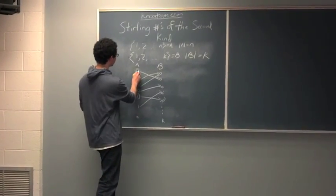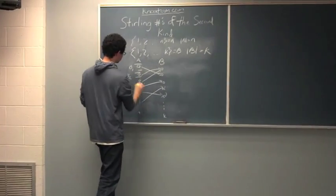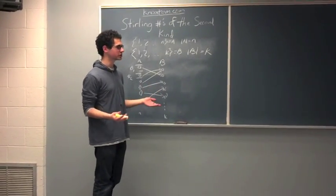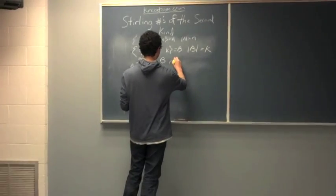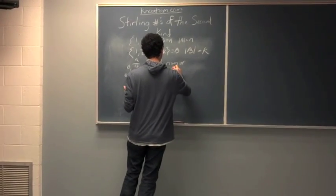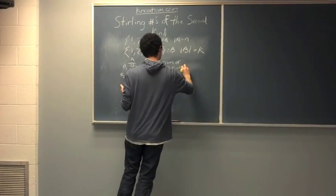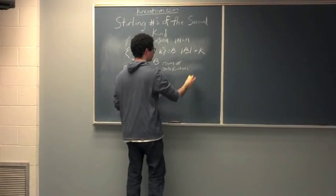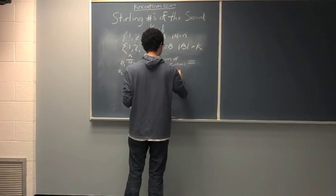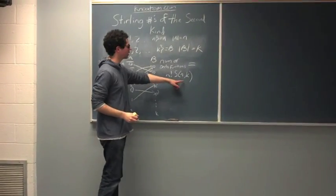So, you know, this would be B1. This would be B2, et cetera, et cetera. And there are N factorial ways of doing this. So, the number of onto functions is equal to N factorial times the Stirling number of N and k.